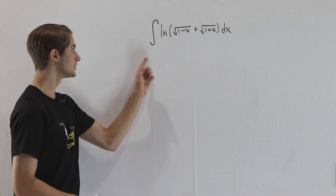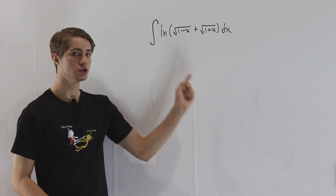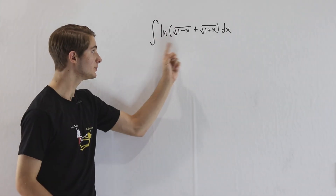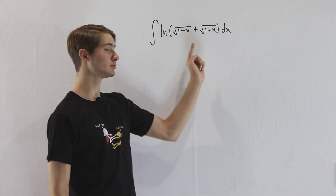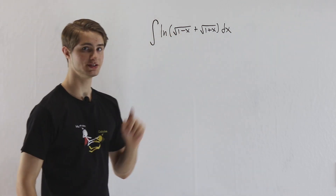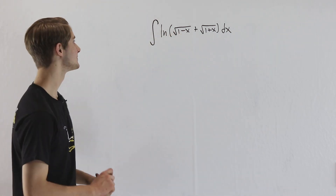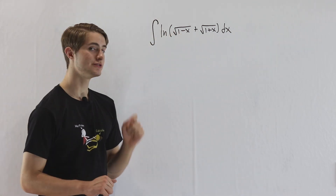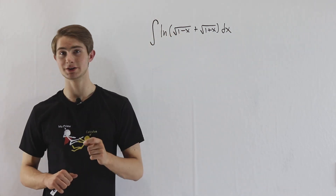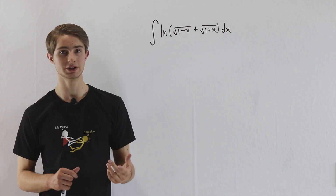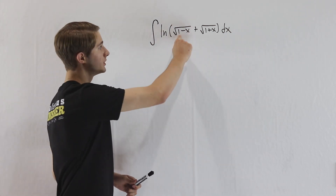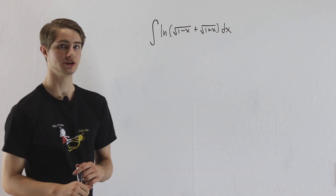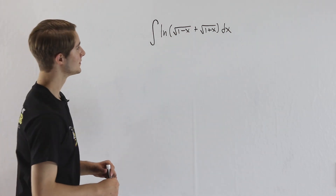We are going to do the integral of the natural log of the square root of 1 minus x plus the square root of 1 plus x, dx. Now, first it might seem like a good idea to try trig substitution. The problem is that our two square roots don't really agree with each other.